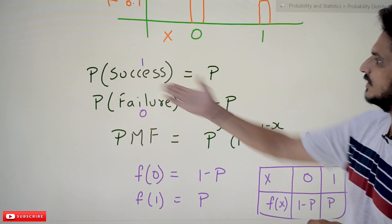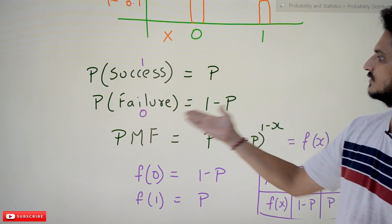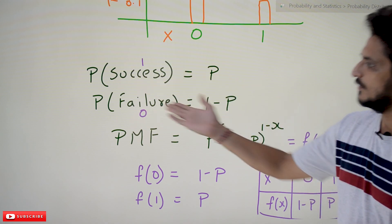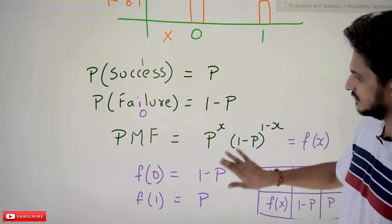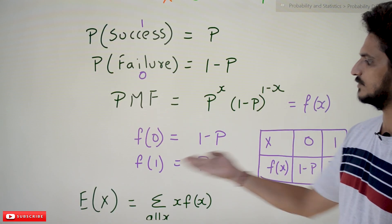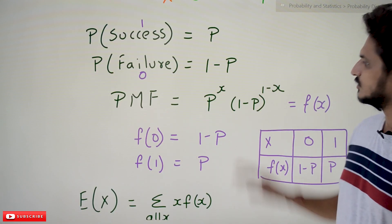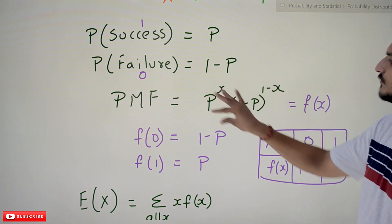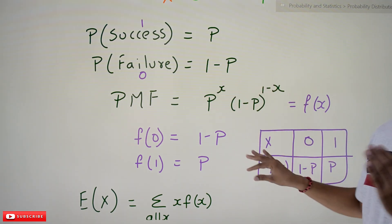So, the probability of success is P and the probability of failure is 1 minus P. When you substitute 0 into the PMF you get 1 minus P, and when you substitute 1 you get P. This confirms the probability mass function for Bernoulli distribution.